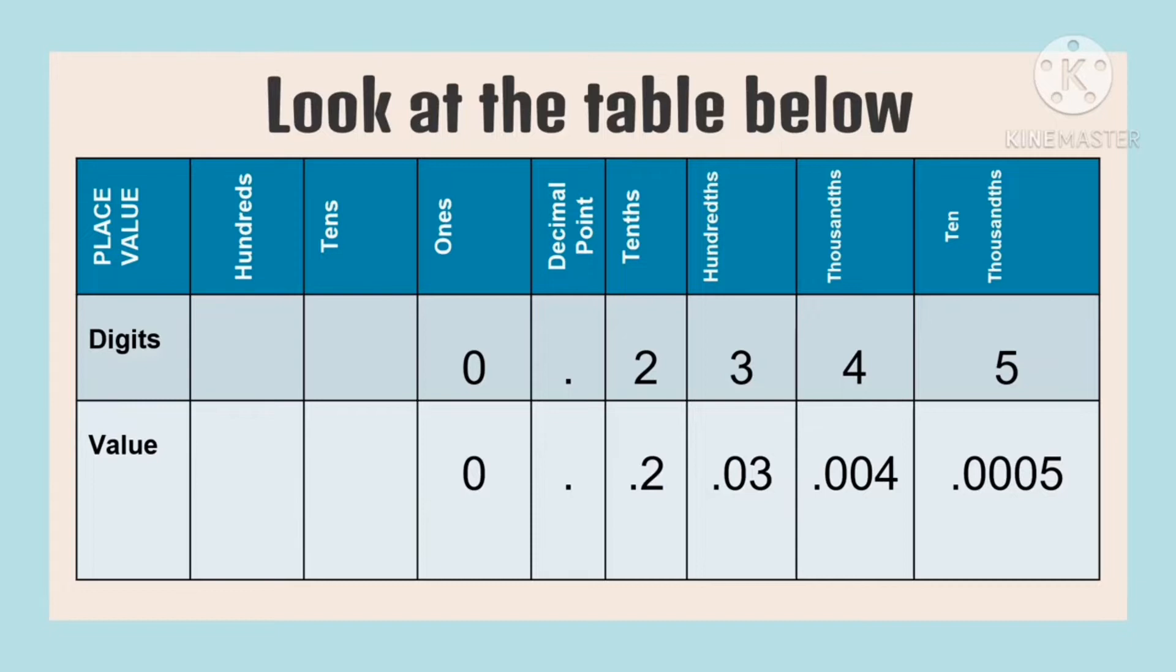Then we have the given digits zero, two, three, four, and five. If we're going to get the value of the digit two, we write the value as 0.2 or it represents two tenths.